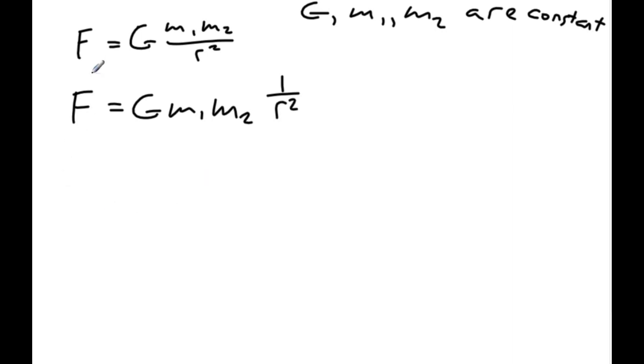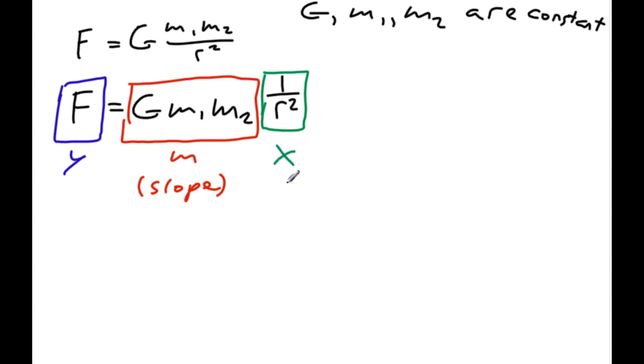I've already got, right now, my linearized formula. Let me draw some boxes around here. This is our Y value. This, G times M1 times M2, is my M value. That would be the slope of a linear equation, or linear graph. And this, 1 over R squared, is basically my X value.